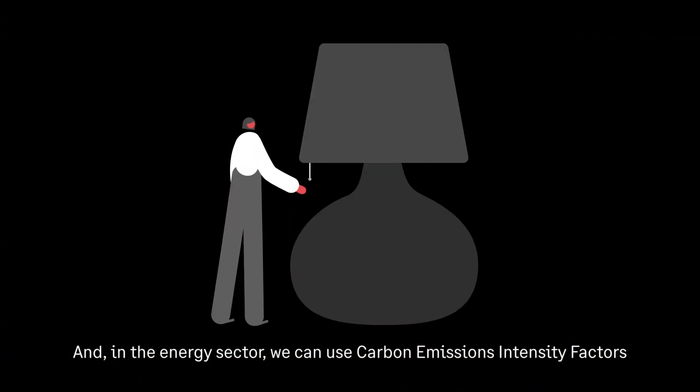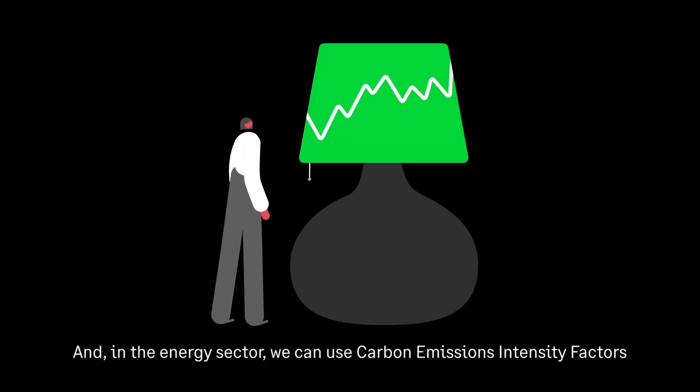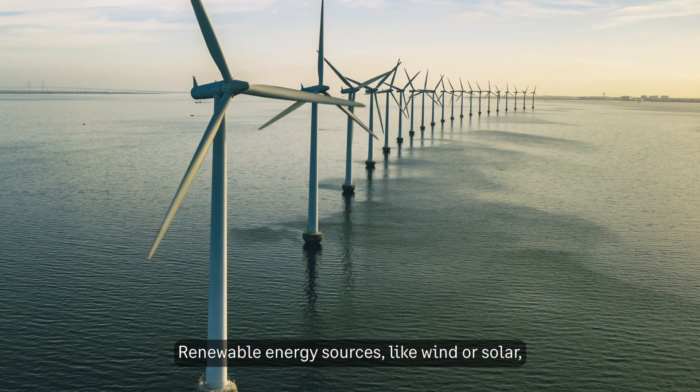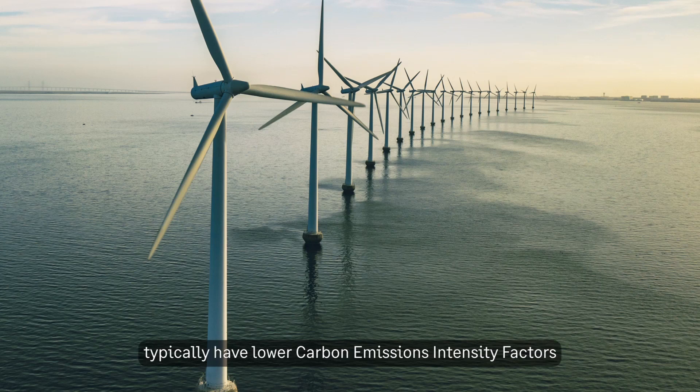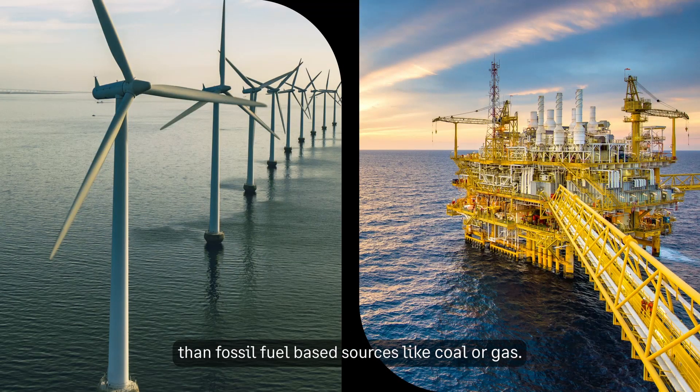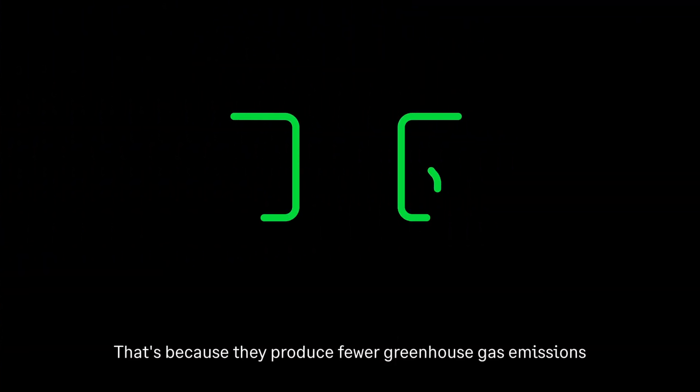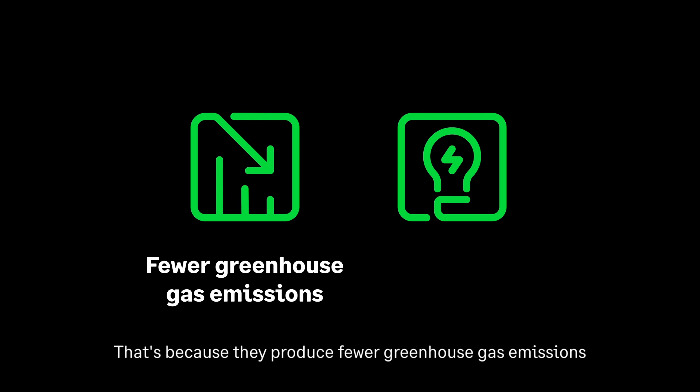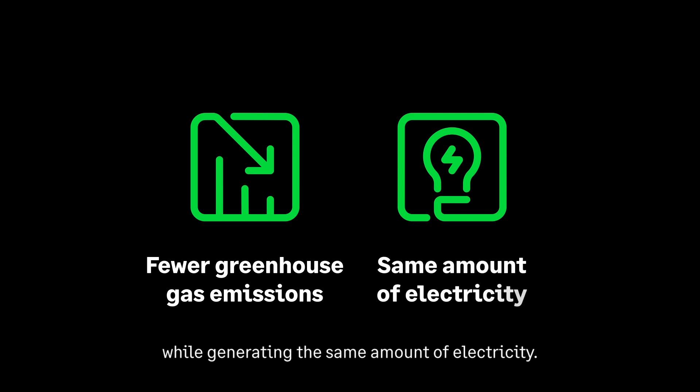In the energy sector, we can use carbon emission intensity factors to compare different sources of electricity generation. Renewable energy sources like wind or solar typically have lower carbon emissions intensity factors than fossil fuel-based sources like coal or gas. That's because they produce fewer greenhouse gas emissions while generating the same amount of electricity.